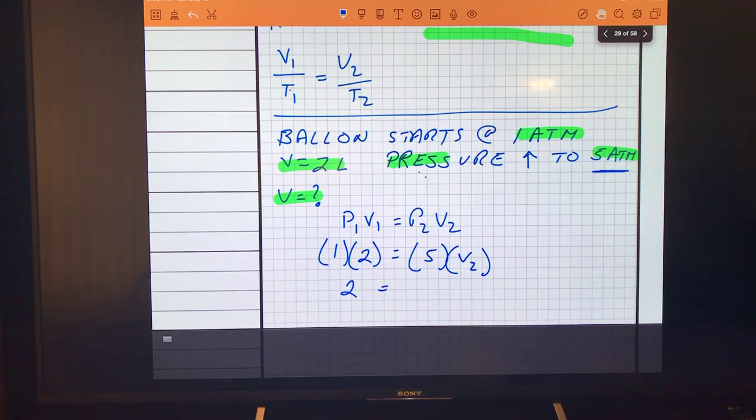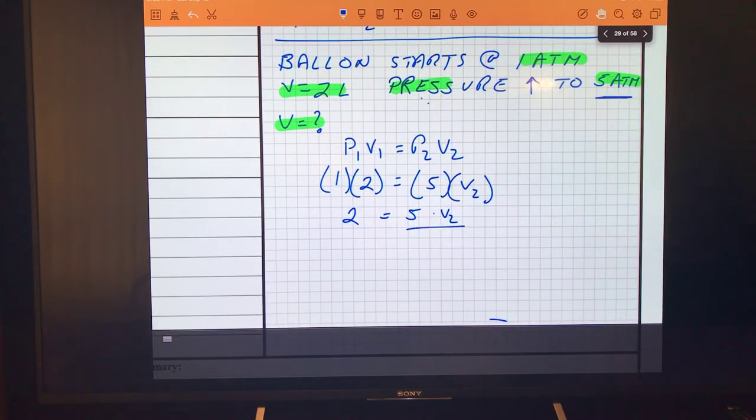2 equals 5 times V2. Algebra says I've got to divide by 5 because I want to cancel those. Whatever I do to one side, I've got to do to the other side. So 2 divided by 5 is 0.4 equals V2. That's how we do that.